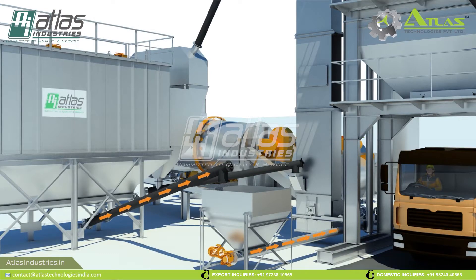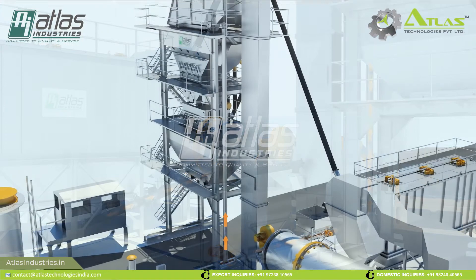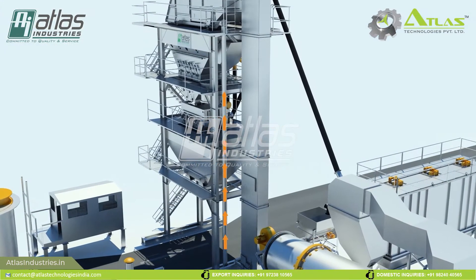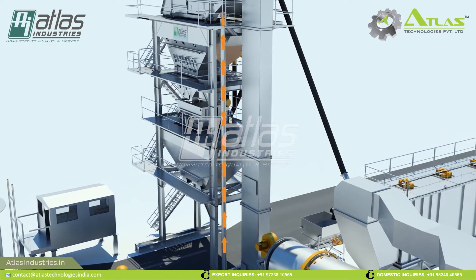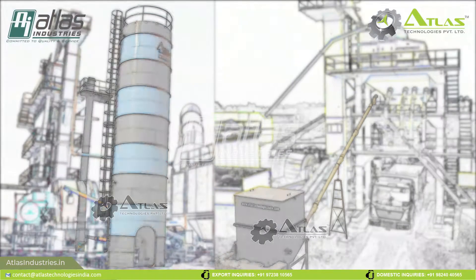The filter bags are cleaned thoroughly and all the dust collected is carried through a screw conveyor. Filler is then transferred via a screw or bucket elevator to its weighing unit, and stored in filler silos or filler bins, where it is available for mixing.